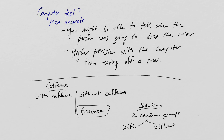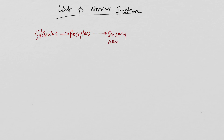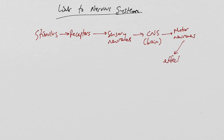They may want to link the nervous system to this required practical. It's almost like a reflex arc but not quite, because it's a conscious action — you're waiting for the ruler to fall and choosing to catch it. The pathway is: stimulus → receptors → sensory neurons → central nervous system (the brain, since it's a conscious decision) → motor neurons → effector, which allows you to catch the ruler.